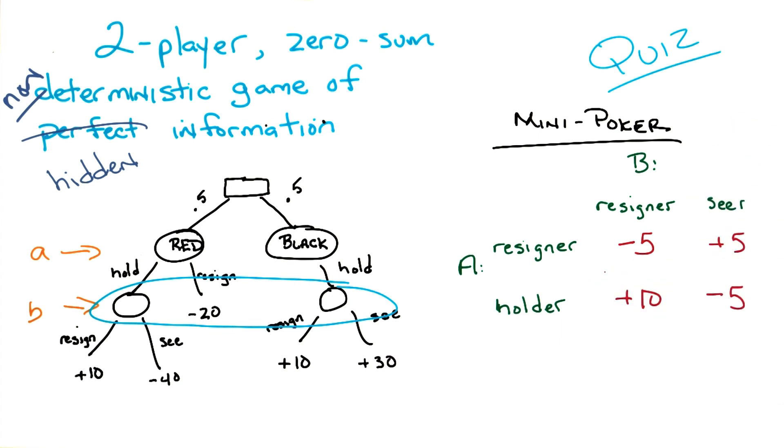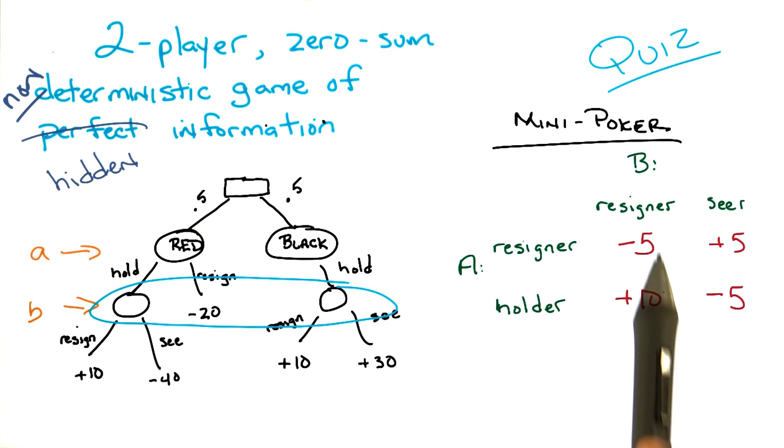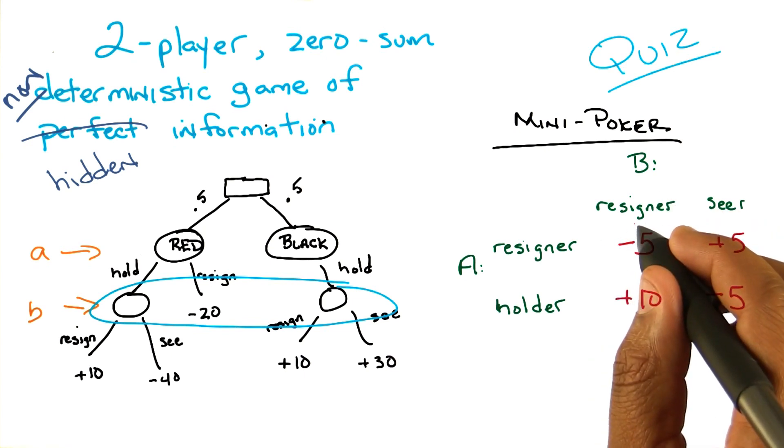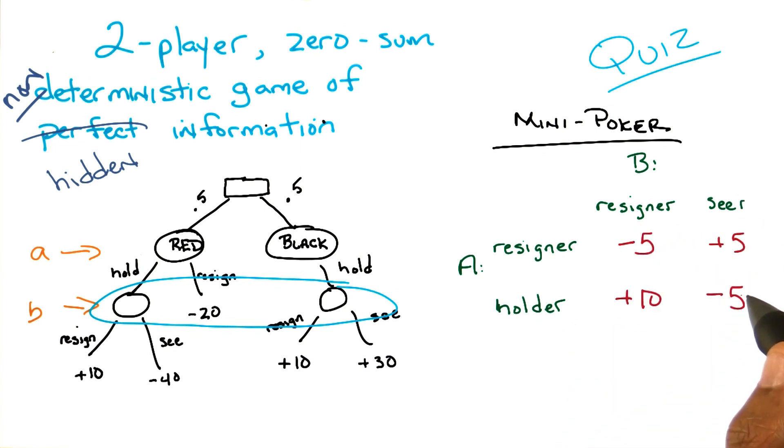What is the value of this game? I was thinking that you might ask that. So can I step through it? Is that okay? Yeah, sure. Go ahead. So A is choosing the first row or the second row. So if A chooses the first row, and then B chooses the column, then if it's the first row, B is going to choose the first column, so A is going to get minus 5. The same story is going to go through on the bottom row. If A chooses the bottom row, then B is going to choose the seer position, which gets the minus 5.